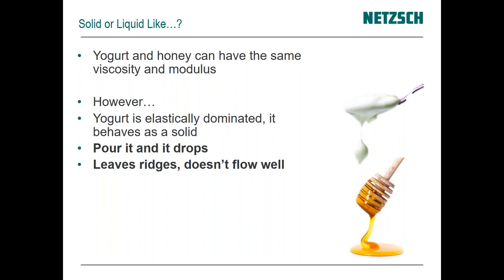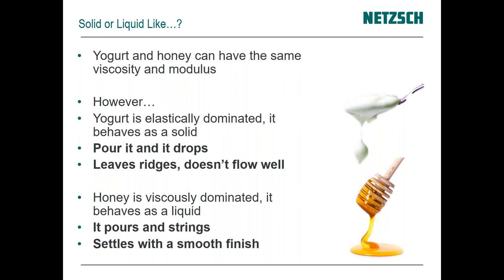If you try to get yogurt to pour — with a large enough dollop on a spoon and you shake it off — it doesn't flow off; it just plops and sits wherever it lands. There's a general structure to the material that doesn't flow afterwards — digging into the container may leave ridges that last for a short time. When you work with smooth materials like honey, syrup, or water, it pours, strings, and settles with a smooth finish.